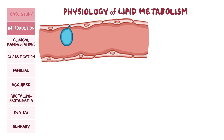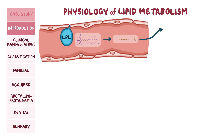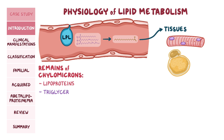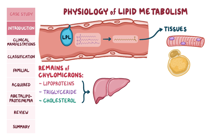An enzyme in capillaries called lipoprotein lipase breaks down the chylomicrons to free the triglycerides, and then it also breaks the triglycerides down into fatty acids. These can be taken up by nearby tissues to generate energy, like in the muscle cells, or for storage, like in adipocytes. The remains of the chylomicrons will contain lipoproteins and a small amount of triglyceride and cholesterol.